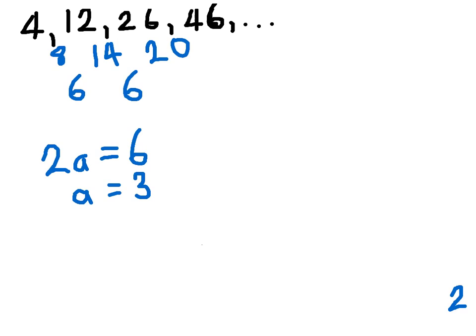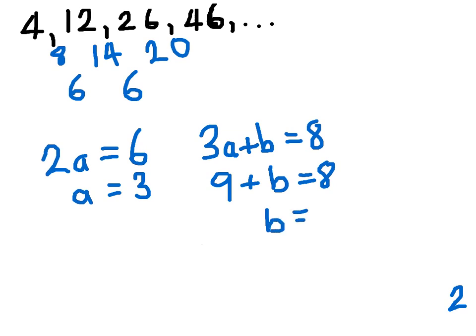Now, for the next, we have 3a plus b. Now that equals 8. We already know that a equals 3. So we've got 9 plus b equals 8. So b must have to take 1 off the 9. So b must equal negative 1.